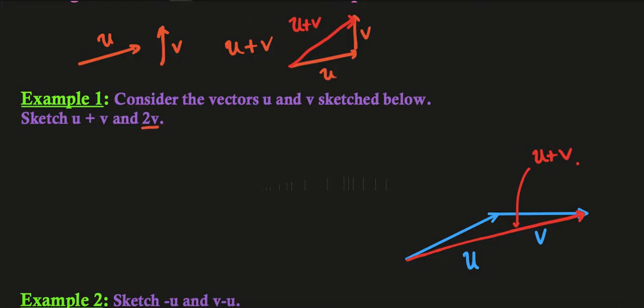And to calculate 2v, well v was initially this vector, 2v will just be a vector in the same direction of twice the length.